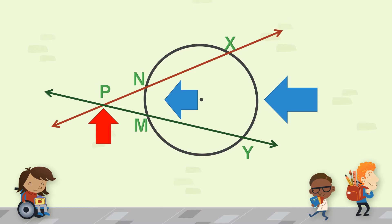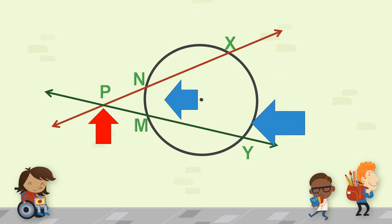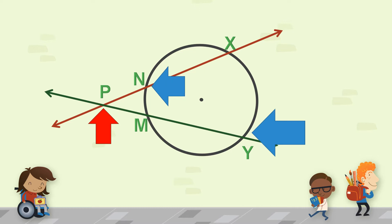If we want to get its measure, you get the measure of arc XY, then subtract the measure of arc NM, then divide by two.